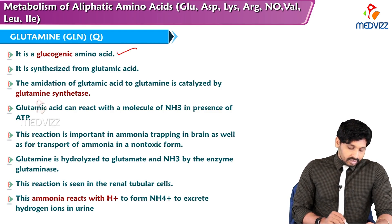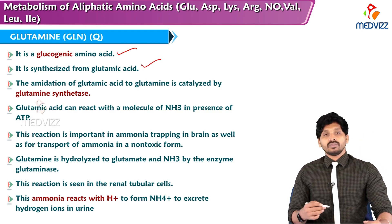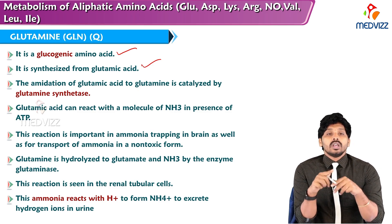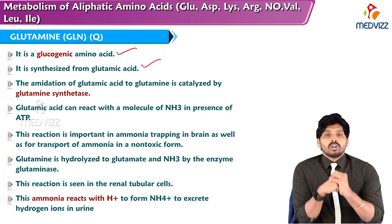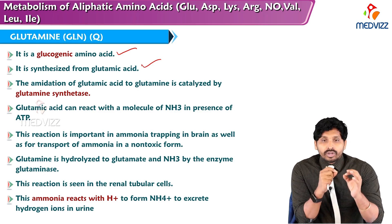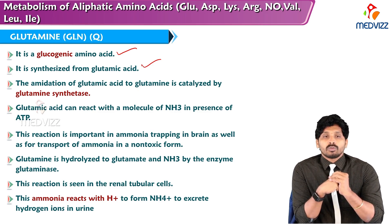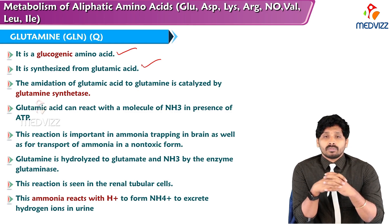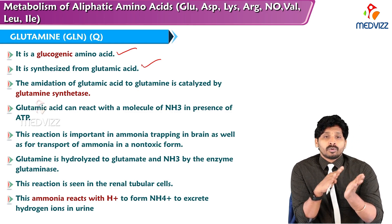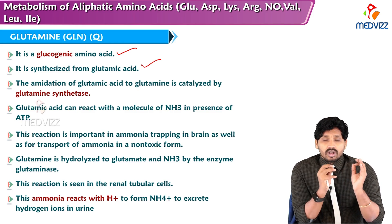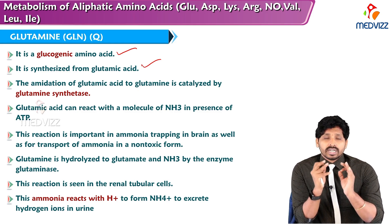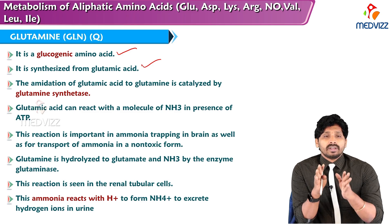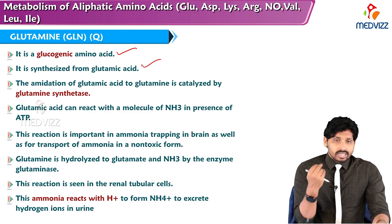Glutamine is a glucogenic amino acid synthesized from glutamic acid. The amidation of glutamic acid to glutamine is catalyzed by glutamine synthetase — glutamic acid reacts with ammonia in the presence of ATP to form glutamine. This reaction is important in ammonia trapping and detoxification from the brain, as well as transport of ammonia in non-toxic form to the liver.